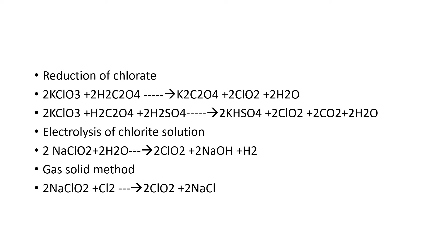Next method is the reduction of chlorate. 2KClO3, potassium chlorate, when treated with oxalic acid, you are going to get potassium oxalate plus Chlorine Dioxide plus water. When potassium chlorate is treated with oxalic acid in the presence of sulfuric acid, you are going to get potassium bisulfate, Chlorine Dioxide, Carbon Dioxide, and water. Another method: sodium chlorite NaClO2 when treated with water gives Chlorine Dioxide plus sodium hydroxide plus hydrogen gas. Gas solid method: when sodium chlorite is treated with Chlorine, you will get Chlorine Dioxide plus sodium chloride.